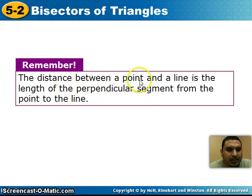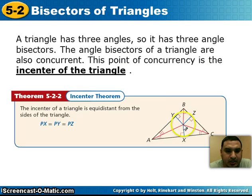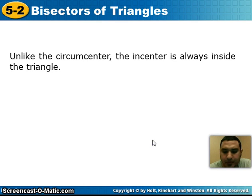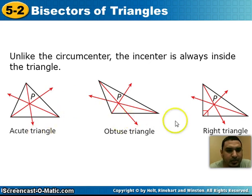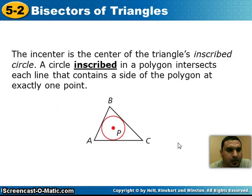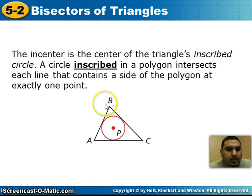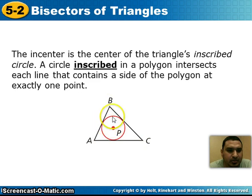Remember that the distance between a point and a line is the length of the perpendicular segment — that's why you see those 90-degree angles in the theorem, representing the shortest distance from P to each side of the triangle. Unlike the circumcenter, the incenter is always going to be inside the triangle regardless of what type of triangle it is. The incenter is the center of the triangle's inscribed circle — a circle inscribed in a polygon intersects each side at exactly one point. Circumscribed means the circle goes around the outside; inscribed means it's inside the polygon and touches once per side.